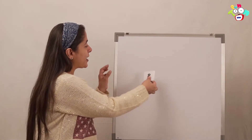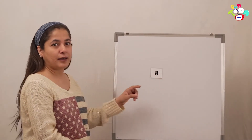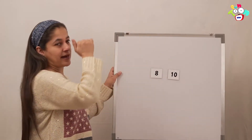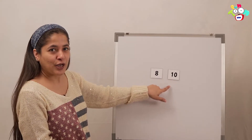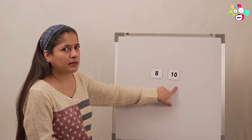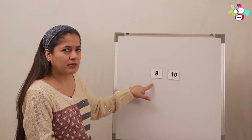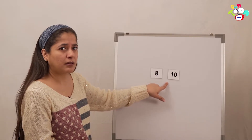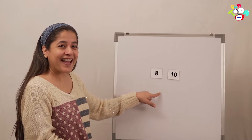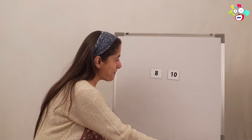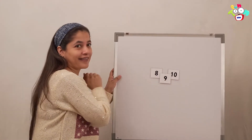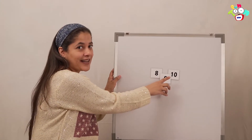Let's do it again. I have number 8, and now I am going to put number 10. So: 8, 10 — is something missing? After 8, is it 10? Oh, there is something after 8, there is something before 10. Yes! Superb! That's number 9. It's 8, 9, 10.